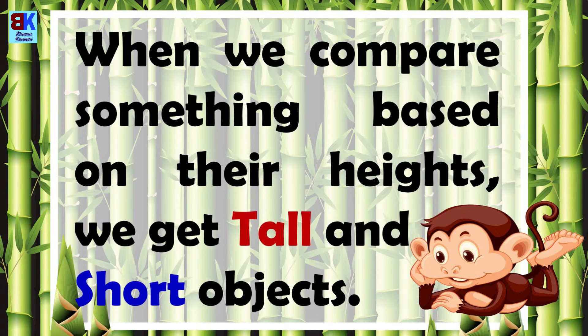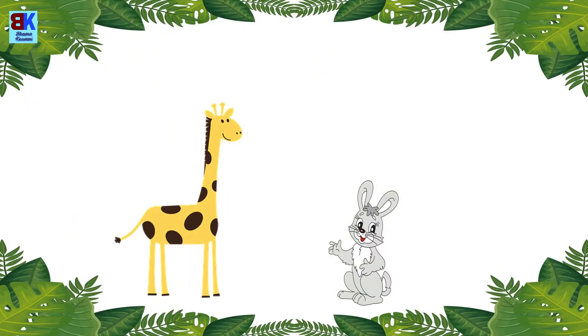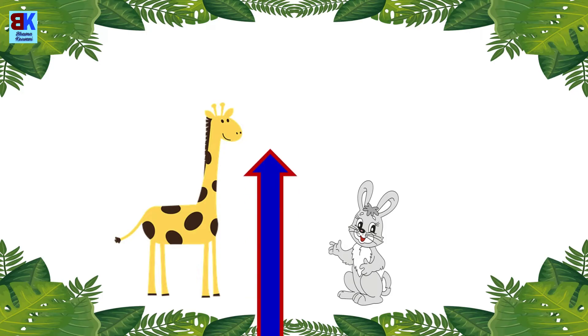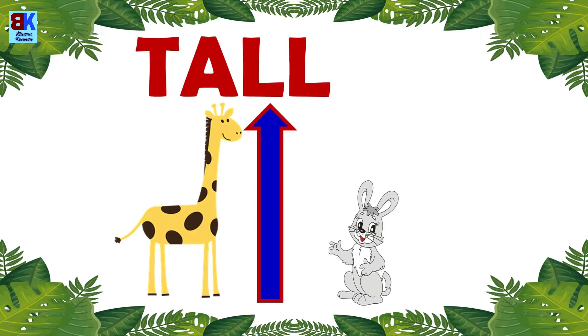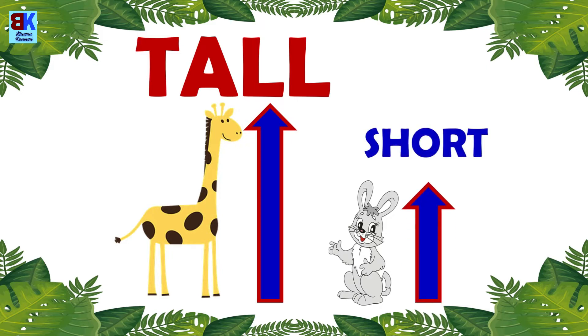When we compare something based on their heights, we get tall and short objects. For example, a giraffe is tall, whereas a rabbit is short.